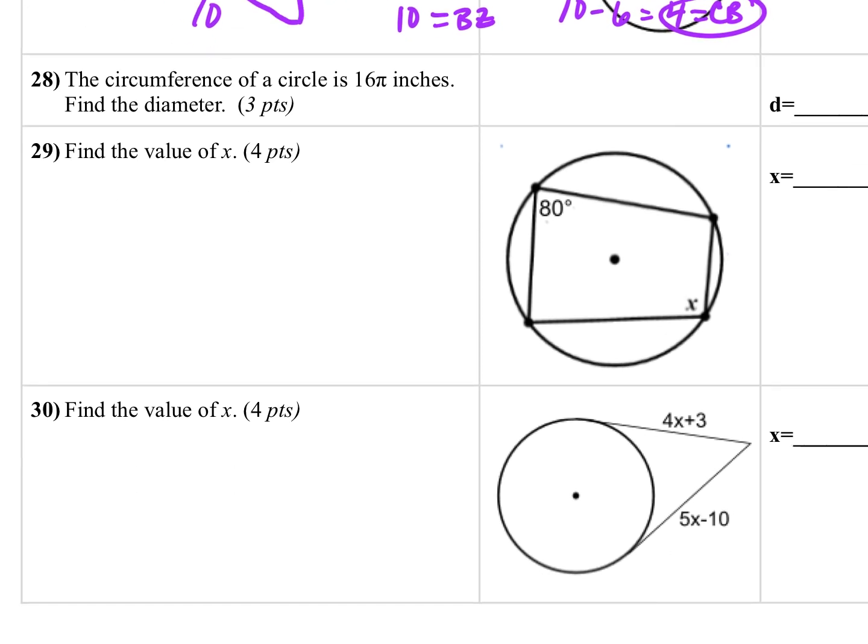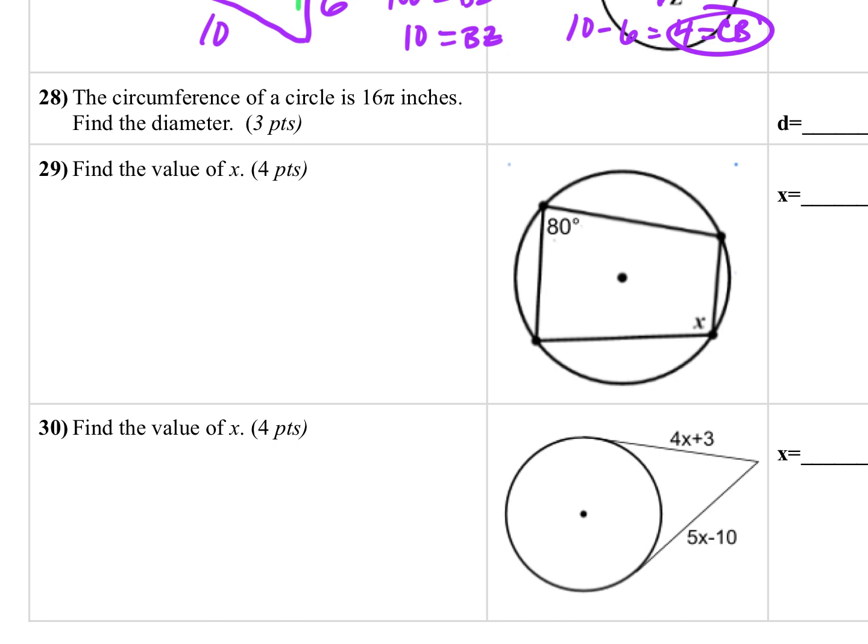Our next one is like an ACT-ish type of problem. This is one where I have to know the circumference formula. And I'm not going to give you the circumference formula ever. Like you need to know that. So the circumference formula is 2 pi r or pi times the diameter. Since I'm looking for the diameter, I'm going to use the pi times diameter problem. It tells me the circumference is 16 pi. And that's equal to pi times the diameter. If I divide both sides by pi to get the diameter by itself, all pi's cancel and I get 16 is equal to the diameter.